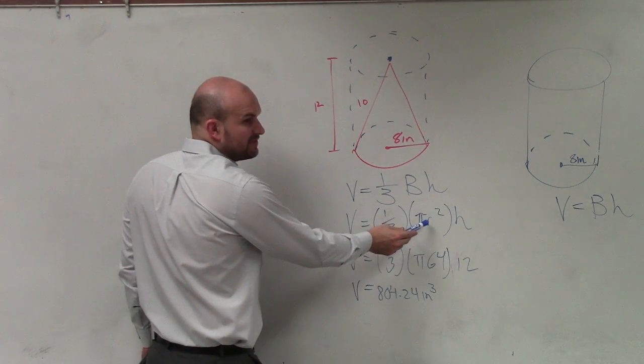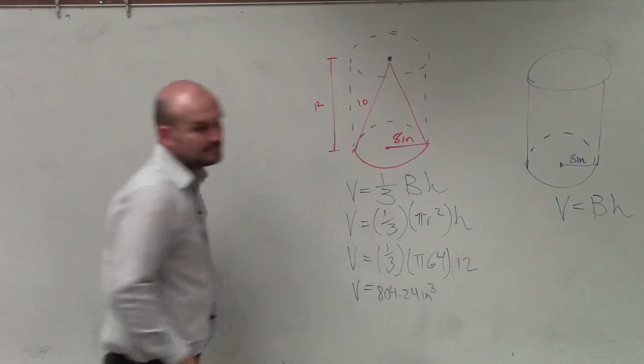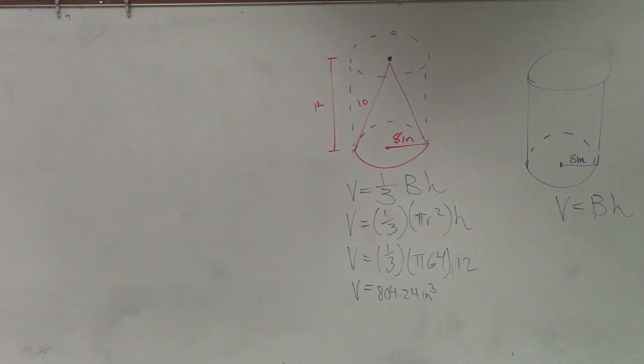This represents the area of the base. Area of a circle is pi r squared. What's that number right by?